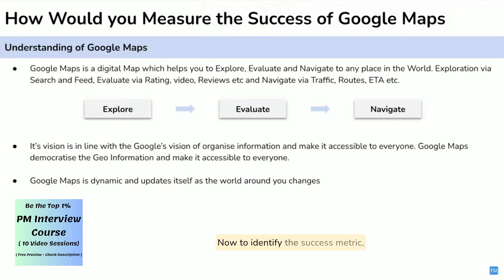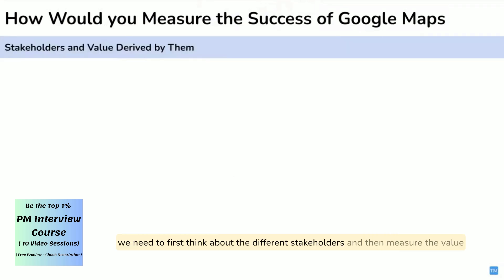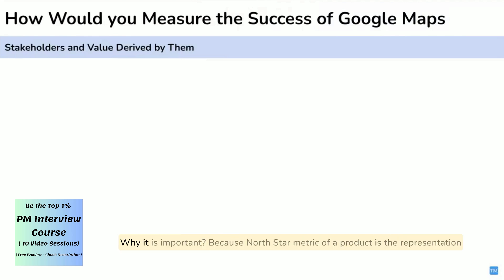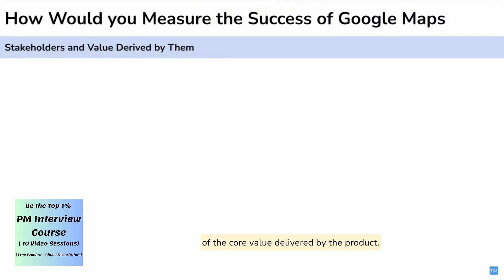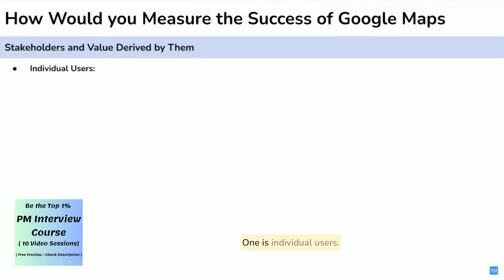Now to identify the success metric, we need to first think about the different stakeholders and then measure the value they are getting from Google Maps. The North Star metric of a product is the representation of the core value delivered by the product. There are four different stakeholder groups, or customer segments. The first is individual users.